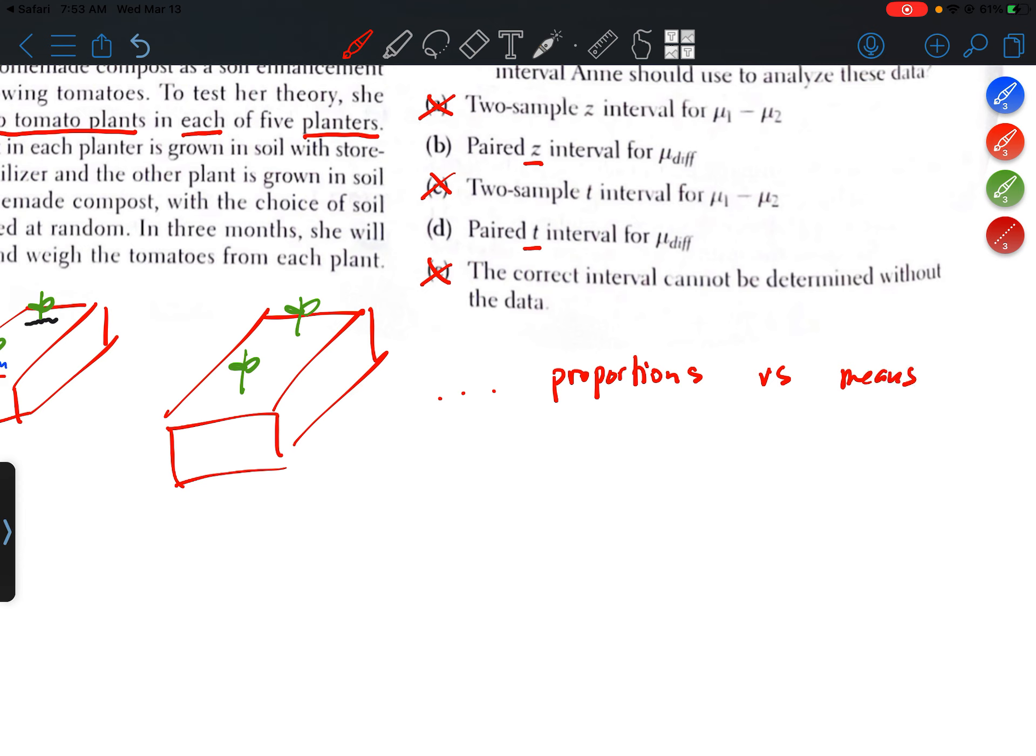All of the procedures that we do for proportions use Z scores, right, so some type of normal distribution. All the procedures that we use for means use a T distribution.